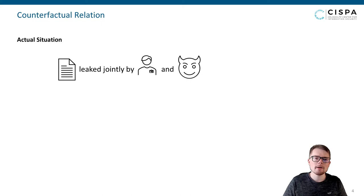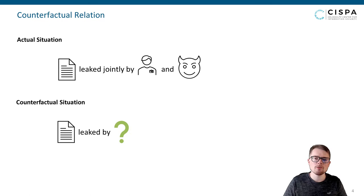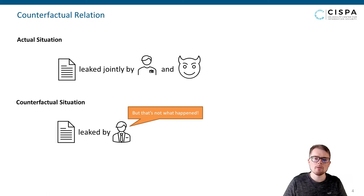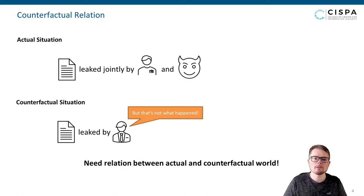Let us come back to the second requirement, where we reasoned about hypothetical scenarios, also called counterfactuals. Assume that the data was leaked jointly by an admin and a hacker. Can we freely choose such a situation independently of what has actually happened? Suppose an employee causes the leak in the counterfactual — then a violation occurred and the set of parties is minimal, so we could wrongly blame the employee. In general, you could blame anybody who is able to cause the violation, even if that is not what actually happened. To obtain meaningful and justifiable results, the counterfactuals have to be related to the actual situation, specified by a counterfactual relation defined over protocol traces.